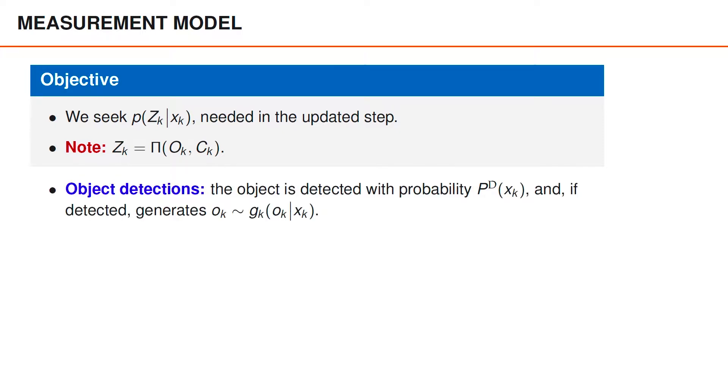As you may recall, an object is detected with probability p_d of x_k, and then generates a measurement from g_k of o_k given x_k, and it is undetected with probability 1 minus p_d of x_k.